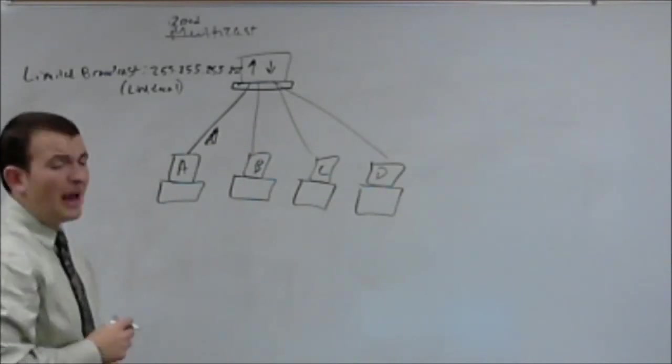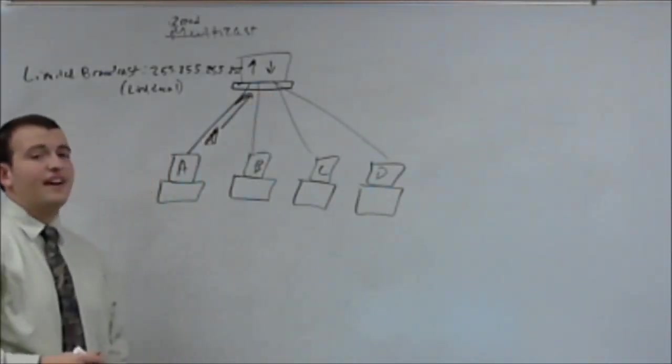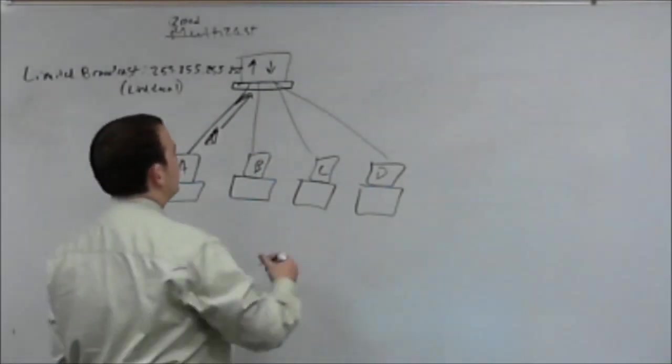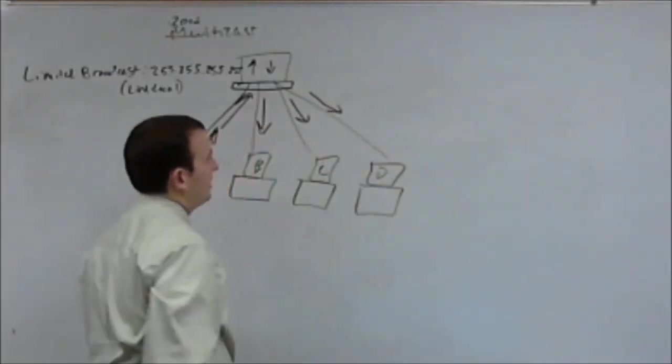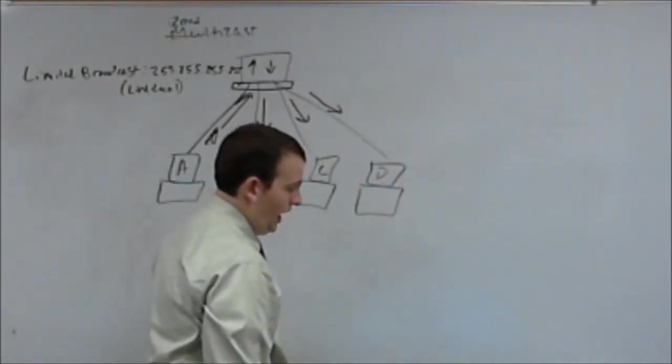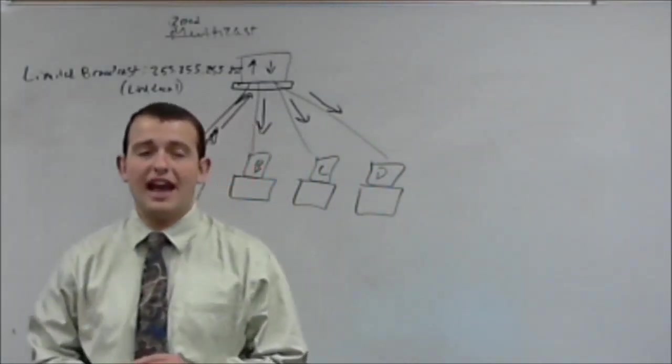So this packet will need to go into the switch, and then if it's got the address 255.255.255.255, it's going to take and be replicated out to everybody, saying this is a broadcast packet.